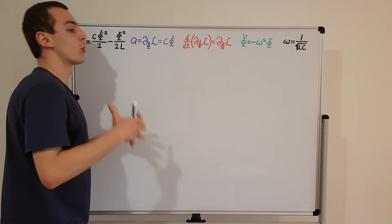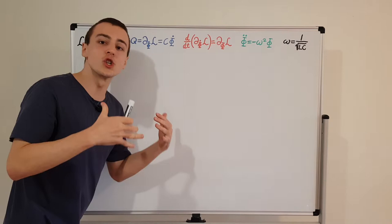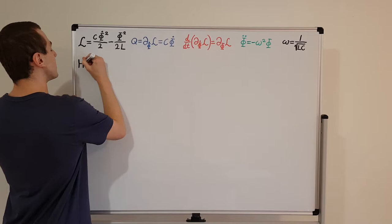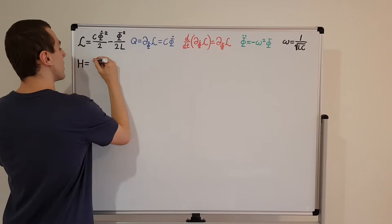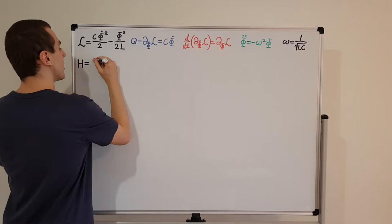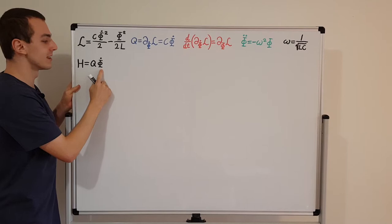Now let's move over to Hamiltonian mechanics. We want to write the Hamiltonian, and to get it from the Lagrangian we have to take the Legendre transform. Capital H denotes the Hamiltonian, and that equals the Legendre transform: we need Q, the canonically conjugate coordinate, and we also need phi dot. These two quantities are analogous to momentum and velocity.